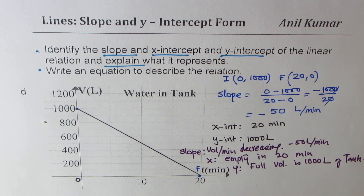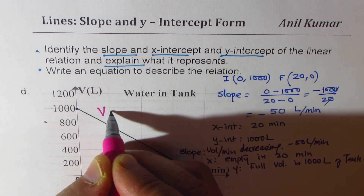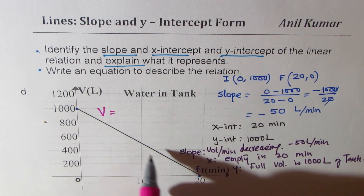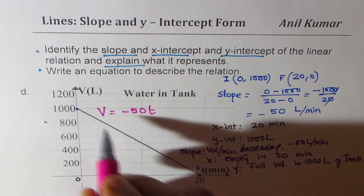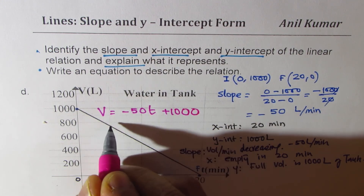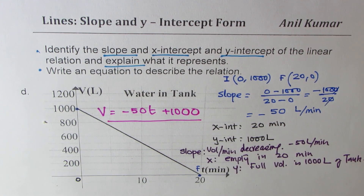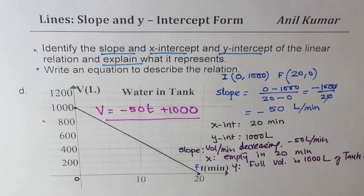I would like you to pause the video and write down the equation for the given graph using all the information. The equation: we want to find the volume at any time — volume is the dependent variable — and that equals negative 50 times t plus 1000, where t is time in minutes and the tank started with 1000 liters. That becomes the equation for this linear graph for water in the tank. With this exercise you understand how to interpret a linear graph and write an equation in slope-intercept form to get meaningful information.